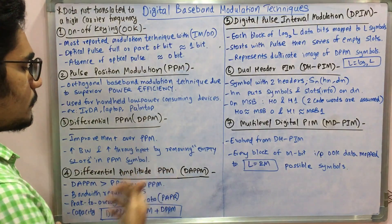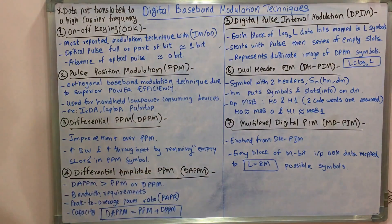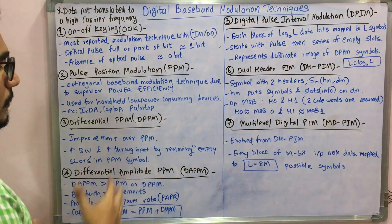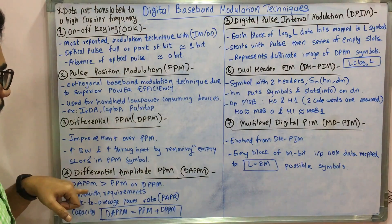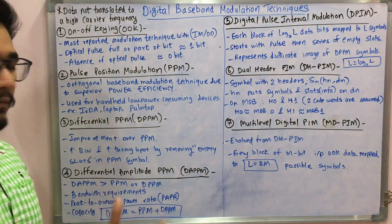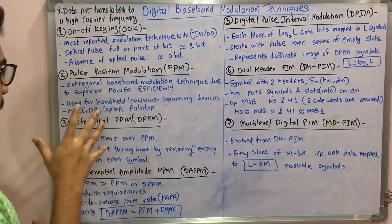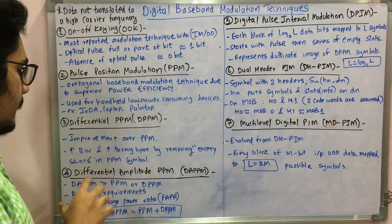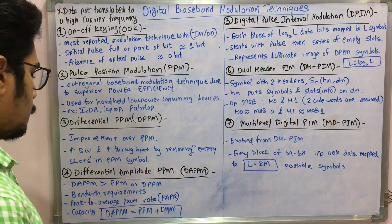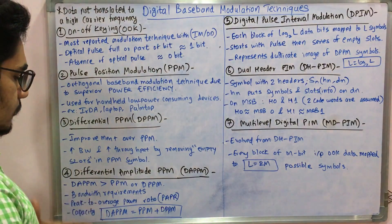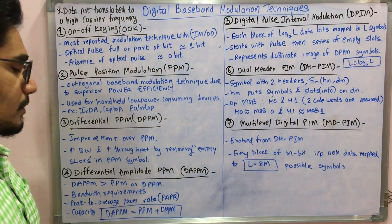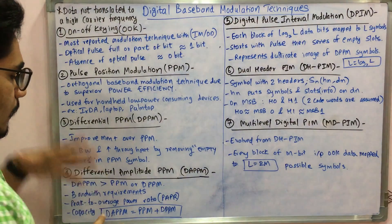The fourth technique is Differential Amplitude Pulse Position Modulation (DA-PPM). It improves upon both PPM and DPPM by also improving the amplitude. It offers much more improvements over PPM and DPPM — the bandwidth requirements are met, the peak-to-average power ratio (PAPR) is addressed, and the capacity is increased. DA-PPM is essentially a combination of both PPM and DPPM.